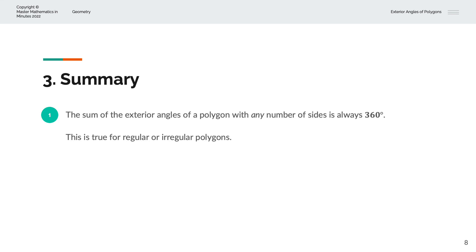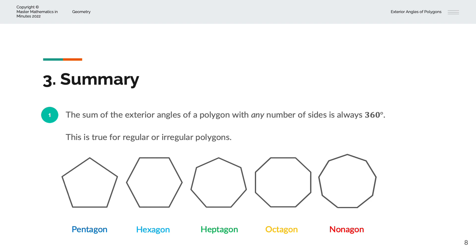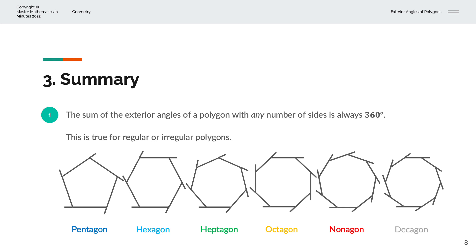To summarize, the sum of the exterior angles of a polygon with any number of sides is always 360 degrees. This is true for a regular or irregular polygon. A regular polygon has sides of equal length and an irregular polygon has sides of different lengths. Polygon names include: pentagon with 5 sides, hexagon with 6 sides, heptagon with 7 sides, octagon with 8 sides, nonagon with 9 sides, and decagon with 10 sides. By extending the lines on each corner, we can label the exterior angles, and their sum is always 360 degrees.